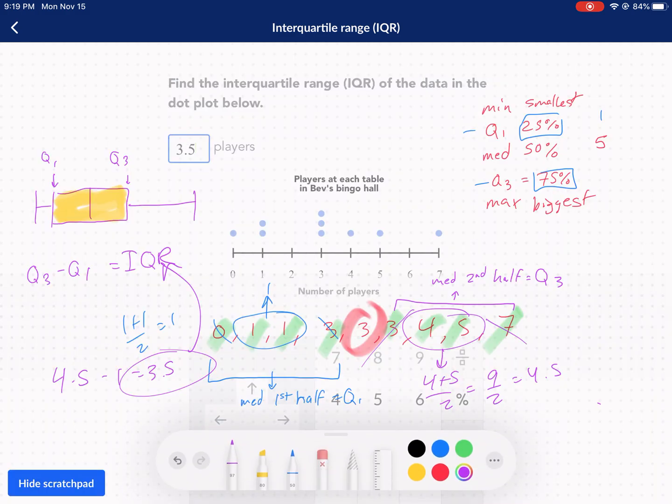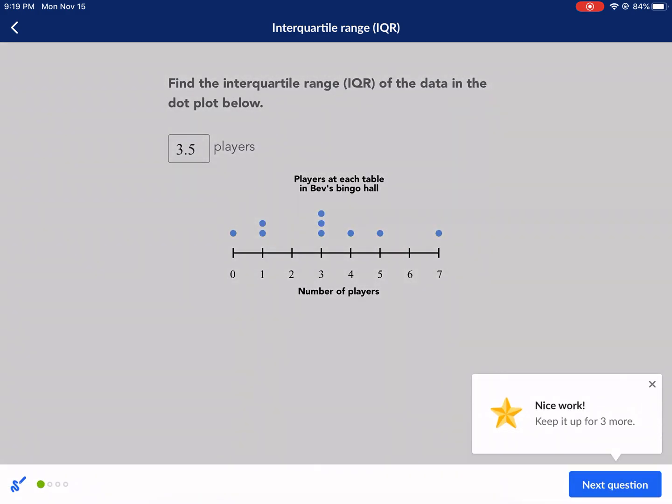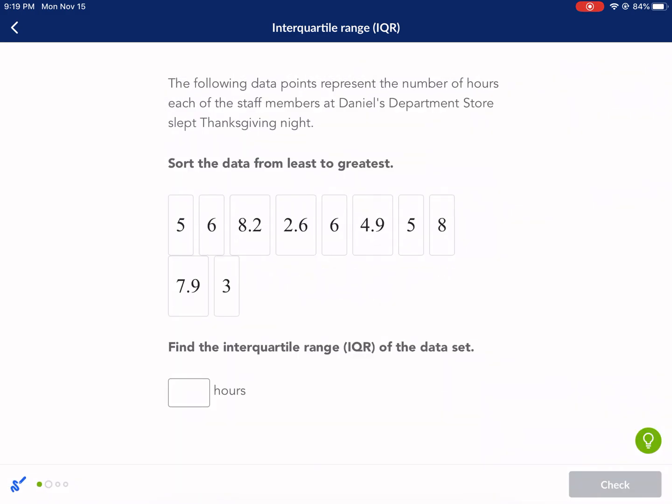Would I say 3.5, right? Okay, yes. All right, next question. Sort the data from least to greatest, and then find the interquartile range of the data set. All right, well, this is going to be annoying.